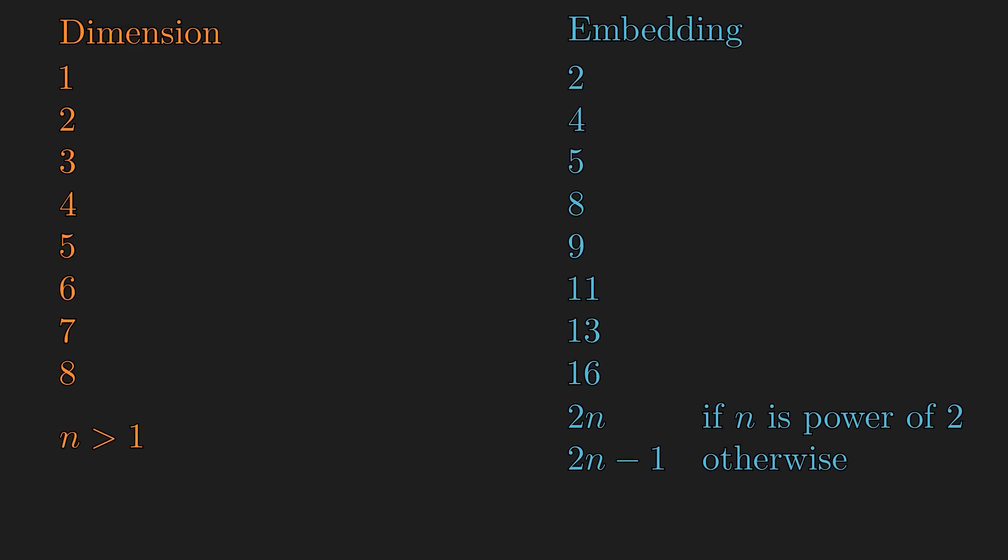At the time of making this video, this is the current best known embedding dimensions of n-manifolds. For powers of 2, it is the same as the Whitney bound. And for every other number greater than 1, it has been slightly improved to 2n-1.